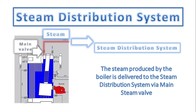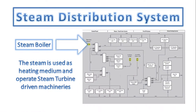The steam produced by the boiler is delivered to the steam distribution through the main steam valve. In the steam distribution system, the steam is used to operate the steam turbine and used as a heating medium for equipment that requires steam heating.